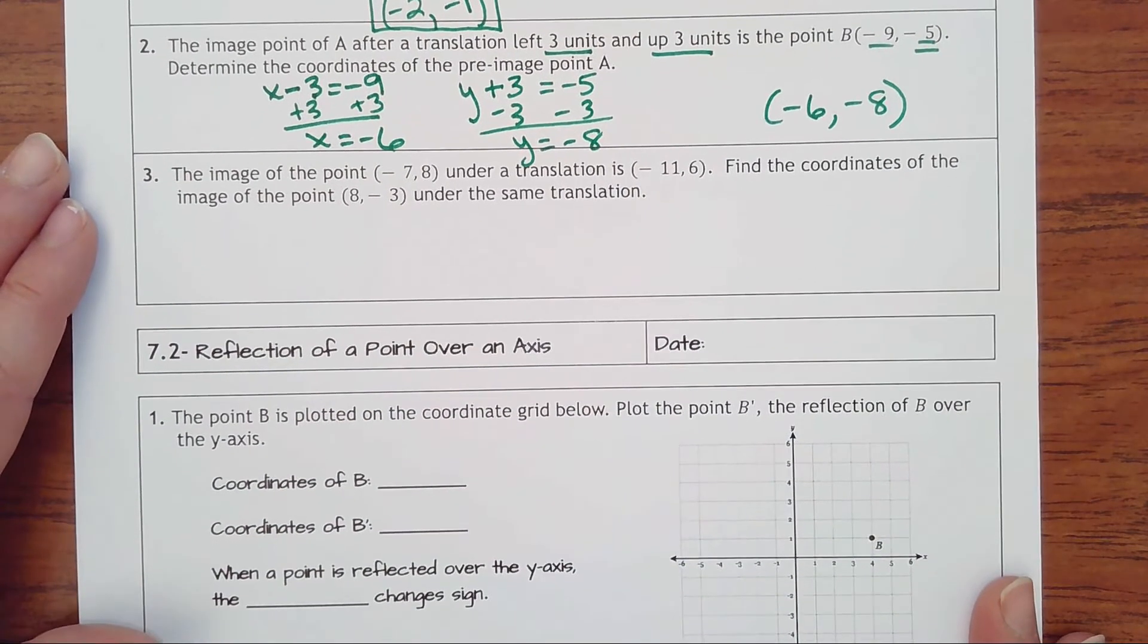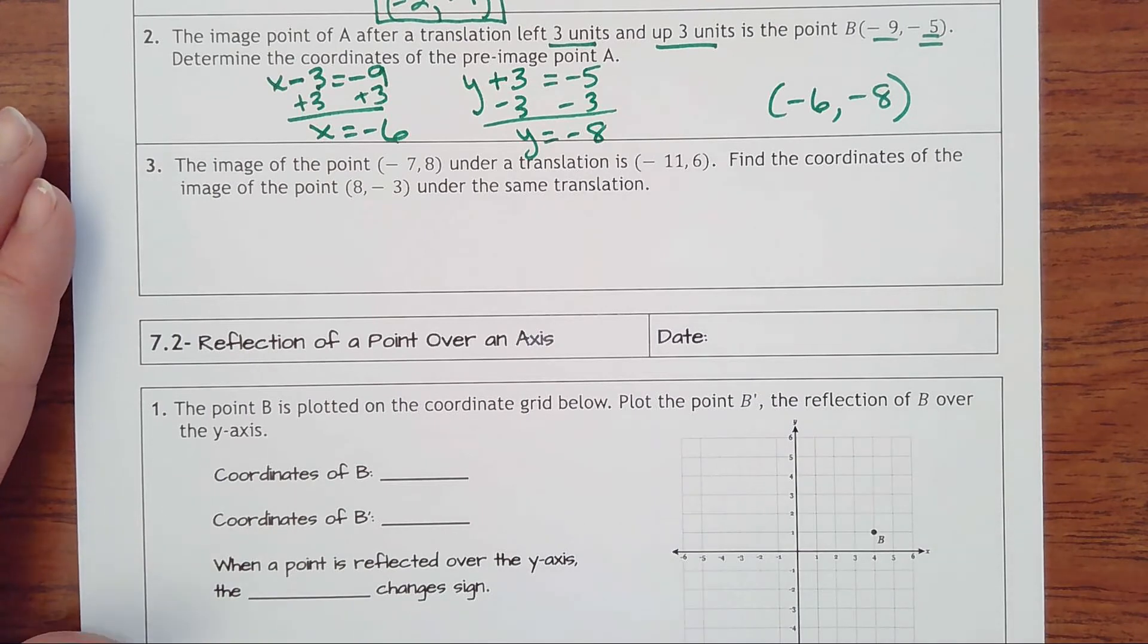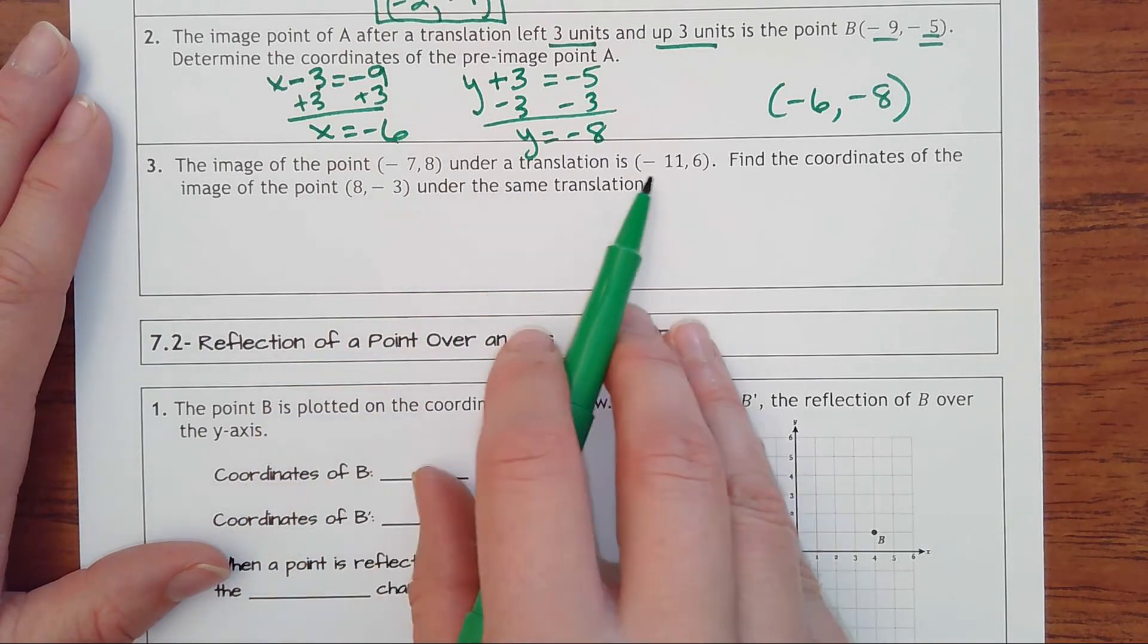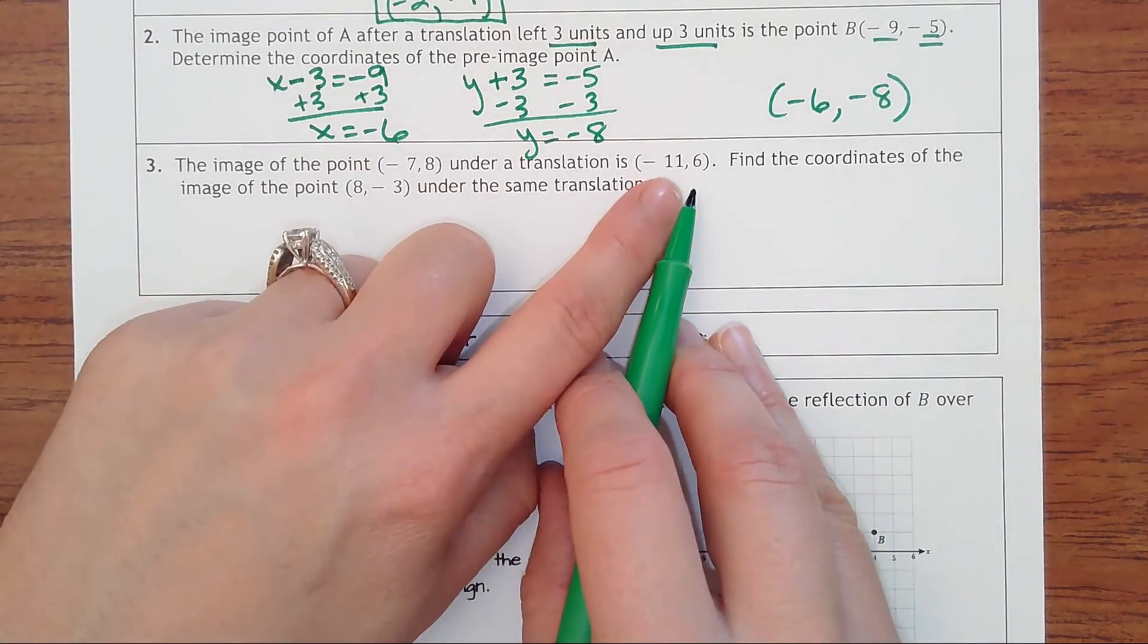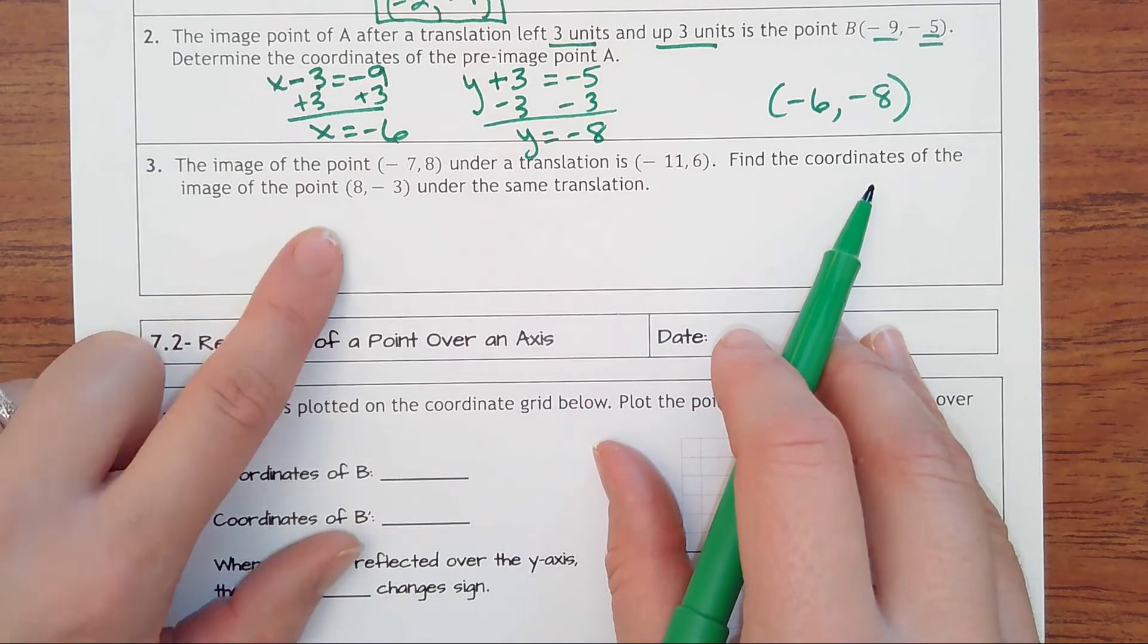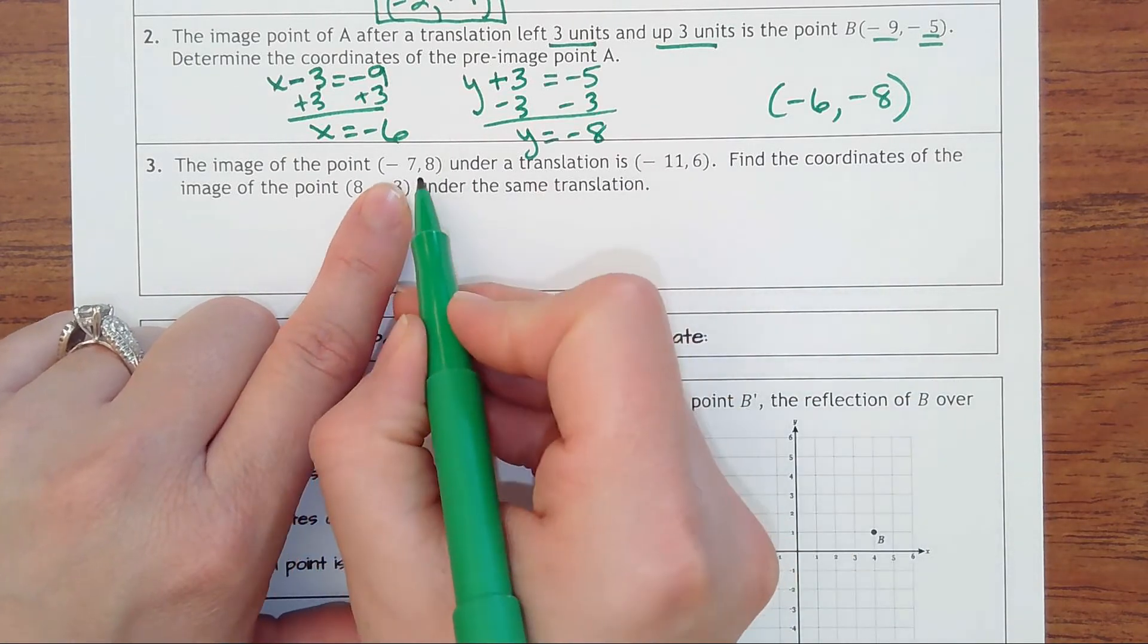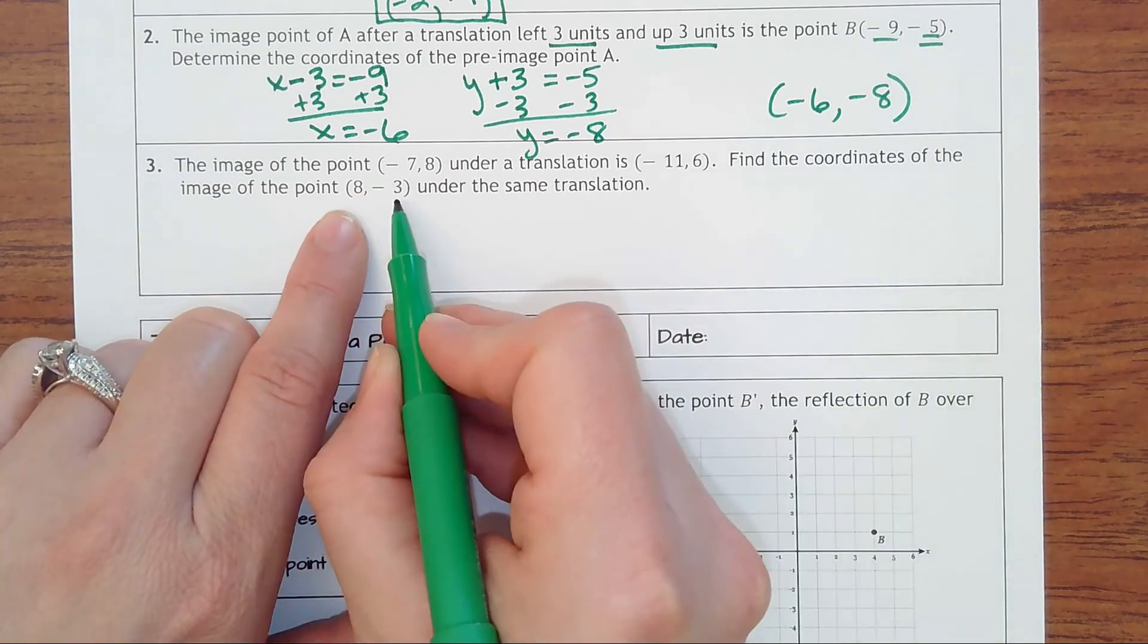And number three, kind of similar to number one. The image of the point (-7, 8) under its translation became (-11, 6). Find the coordinates of the image of the point (8, -3) under the same translation. So basically trying to figure out what happened here to then do the same thing to this other ordered pair (8, -3).